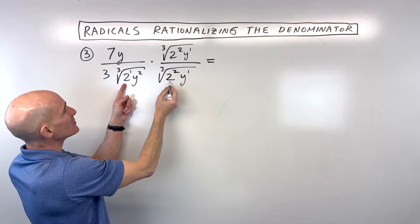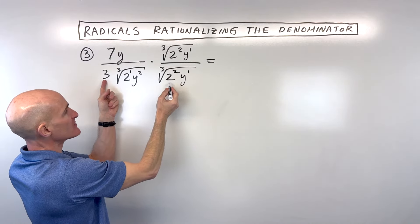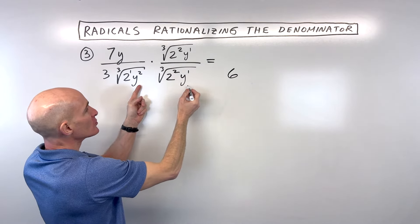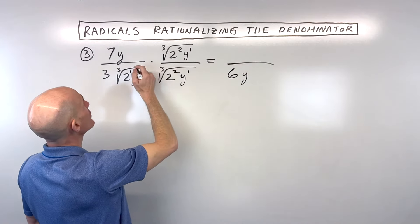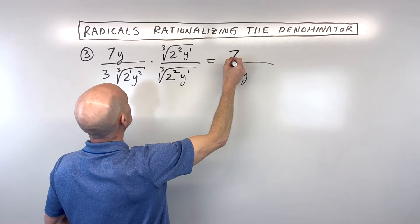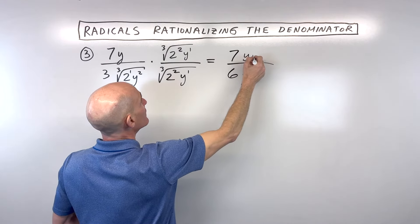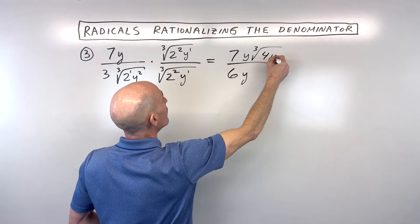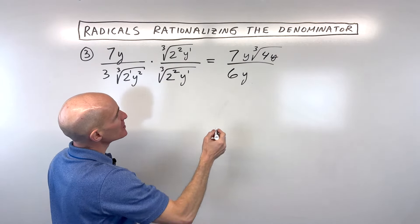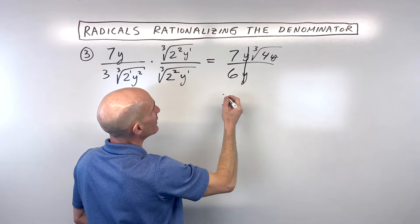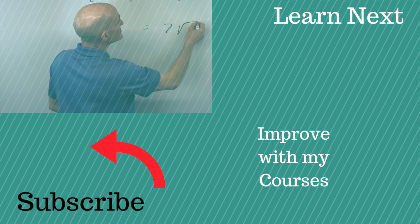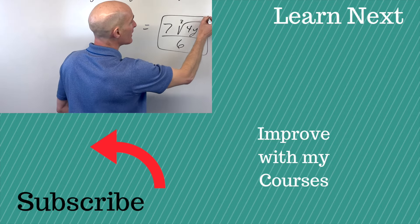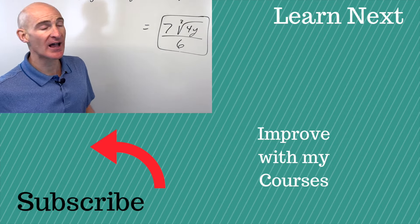So when we multiply across, the cube root of 2 cubed is 2, times 3 gives us 6. We get y cubed, and the cube root of y cubed is just y. In the numerator, we've got 7, times y, times the cube root of 2 squared, which is the cube root of 4, times y. Now all we have left is to cancel the y's. Our final result is 7 times the cube root of 4y, divided by 6. Notice we got rid of that radical in the denominator — which was our goal — to rationalize it.